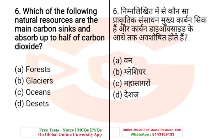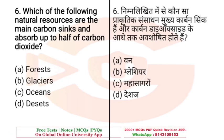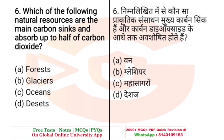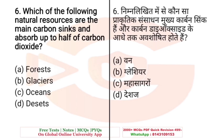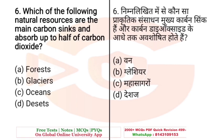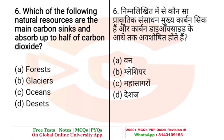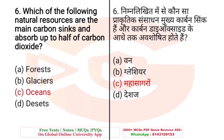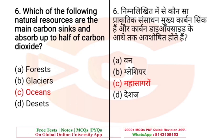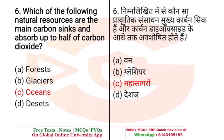Question: Which of the following natural resources are the main carbon sinks and absorb up to half of the carbon dioxide? Options: A. Forests, B. Glaciers, C. Oceans, D. Deserts. The right answer is C — Oceans. Oceans are natural resources that act as carbon sinks and absorb up to half of the carbon dioxide.